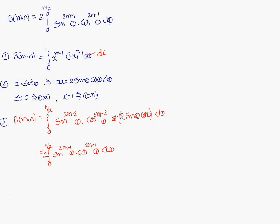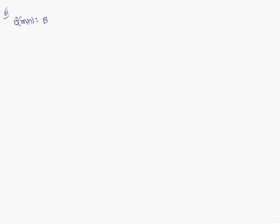So, Beta(m, n) is equal to 2 times the integral from 0 to pi/2 of sin^(2m-1)(θ) cos^(2n-1)(θ) dθ, and this is the second property. Similarly, the third property: Beta(m, n) is nothing but equal to Beta(m+1, n) plus Beta(m, n+1). This one we have to prove.